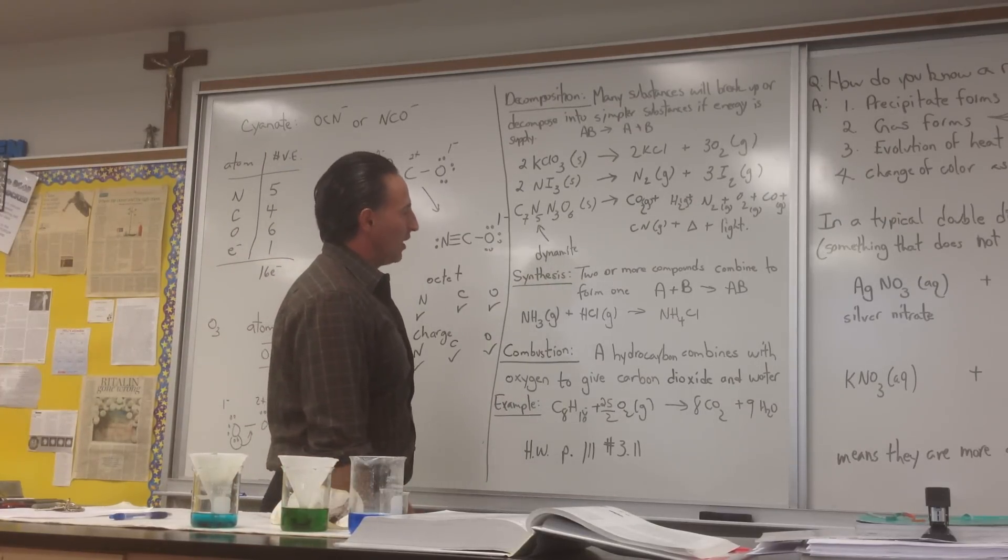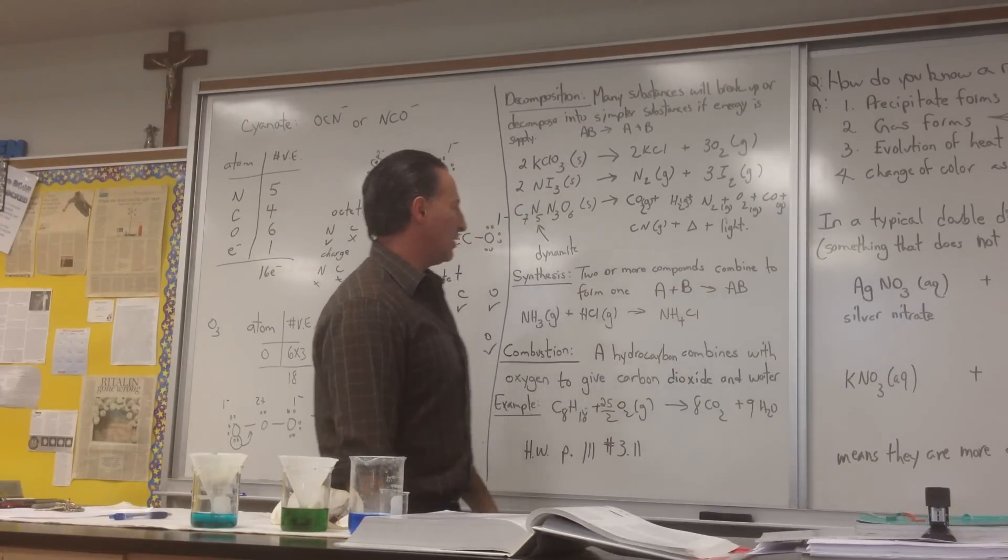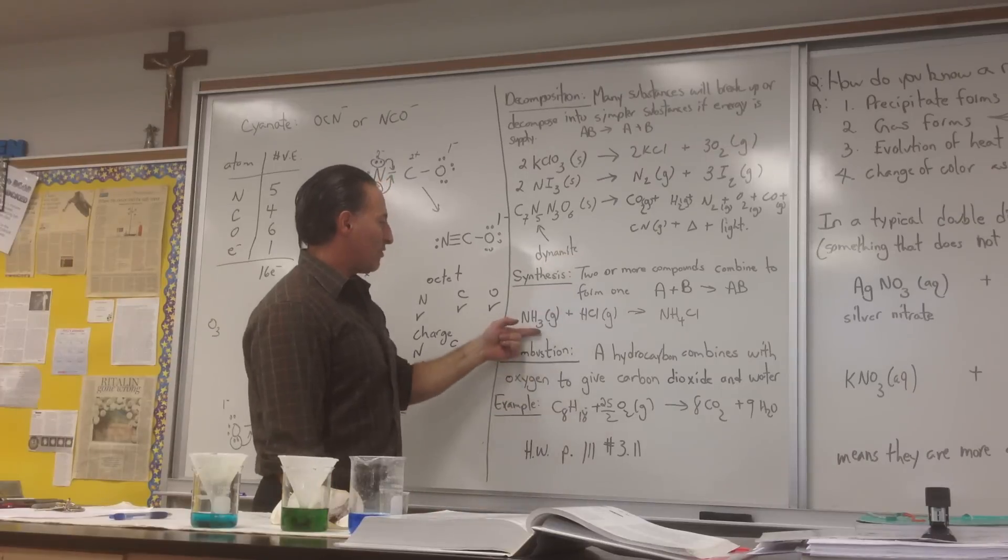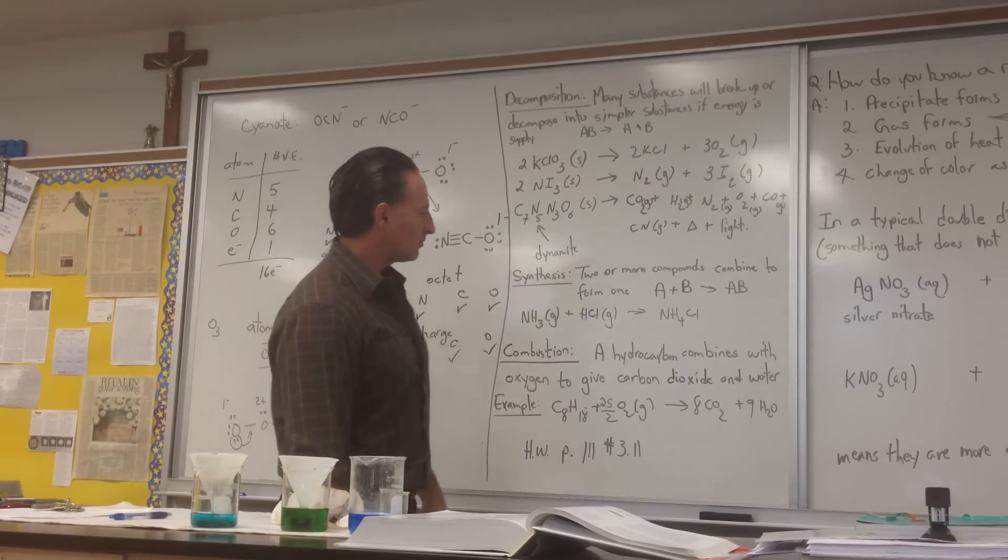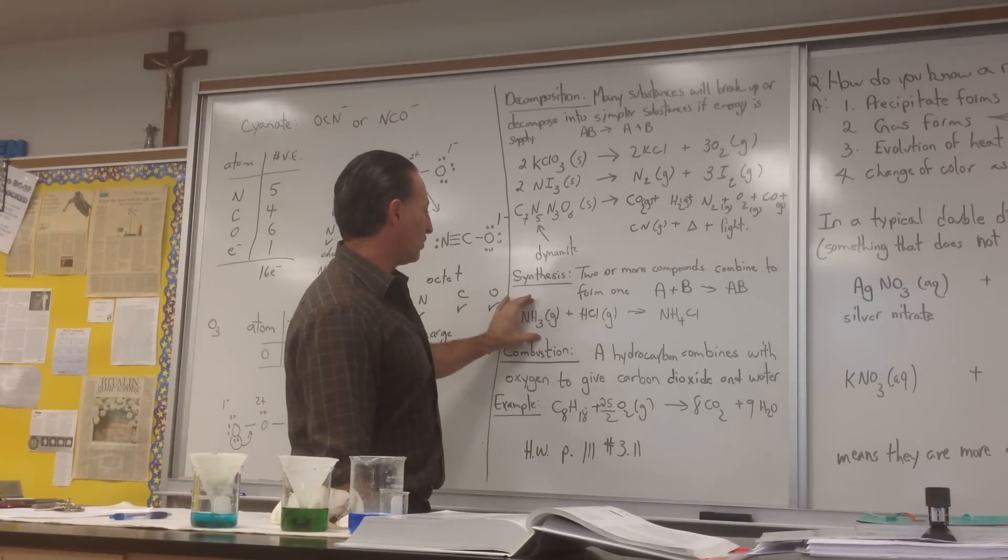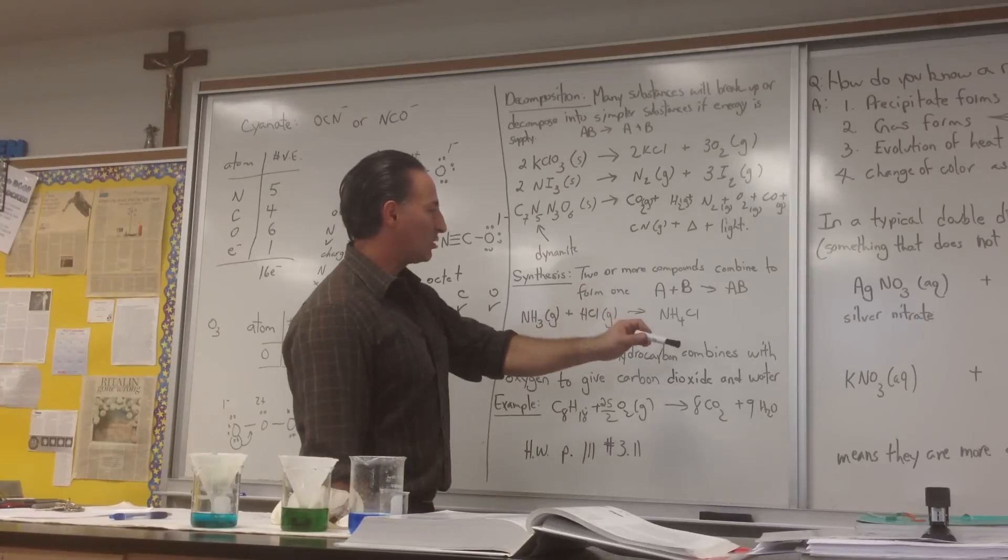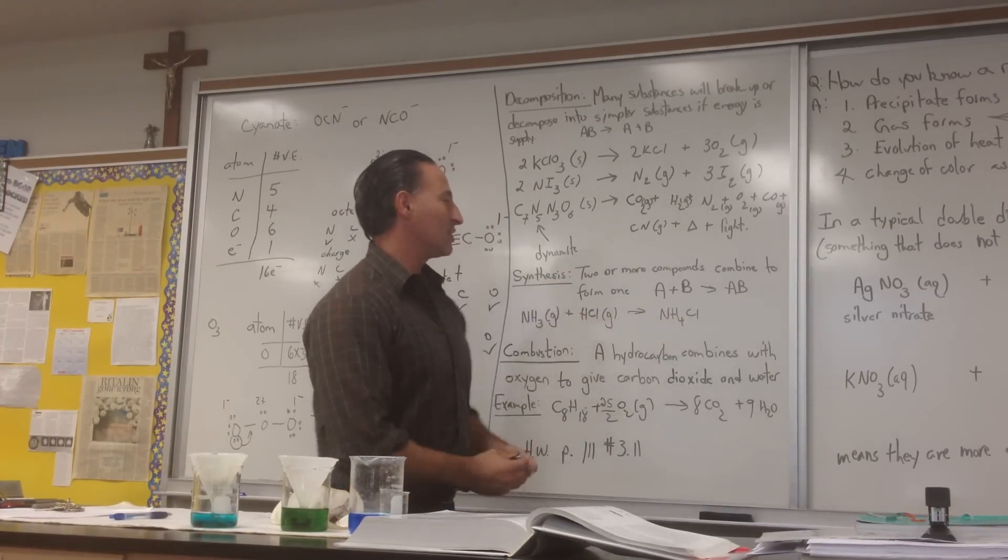The other type of reaction we need to be aware of is a synthesis reaction where two or more compounds combine to form one. So A plus B forming AB. An example of that would be when you have ammonia gas combining with hydrochloric acid gas to form ammonium chloride. It's a classic demonstration where they show, say, a beaker full of ammonia gas and a Q-tip imbued with hydrochloric acid. You bring it close to the ammonia gas, you'll see a white smoke forming. That white smoke is the ammonium chloride.